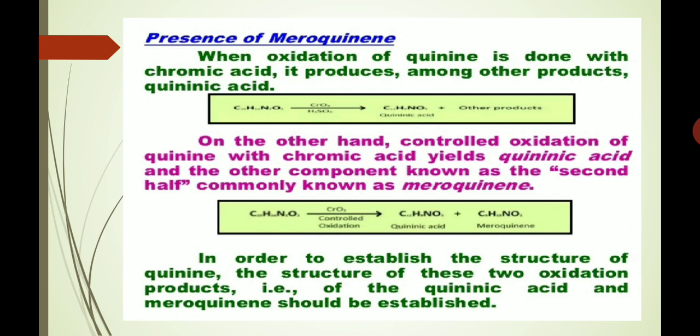Presence of meroquinine: when oxidation of quinine is done with chromic acid, it produces among other products quininic acid. Controlled oxidation of quinine with chromic acid yields quininic acid and another component known as the second half, commonly known as meroquinine, as shown in this reaction. In order to establish the structure of quinine, the structure of these oxidation products — quininic acid and meroquinine — should be established.